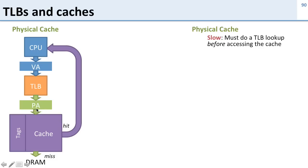Physical caches are simple, but they're slow — that's the real problem. We have to do the TLB lookup before we access the cache. So if the TLB takes about one cycle and the cache takes about one cycle, it's now going to take us two cycles to find data in the cache.